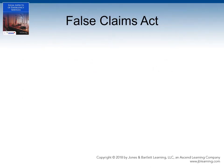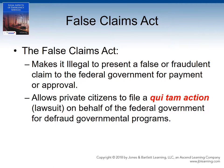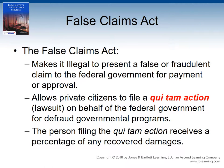Somewhat related to the Anti-Kickback Statute is the False Claims Act, which makes it illegal to present a false or fraudulent claim to the federal government for payment or approval. The hard-hitting facet of this law is that it allows private citizens to file a lawsuit against the alleged wrongdoer on behalf of the federal government in what is known as a qui tam action. If such a lawsuit is successful, the person who filed the qui tam action receives a percentage of any recovered damages, which obviously provides some incentive for the individual to pursue such a cause of action on behalf of the government.